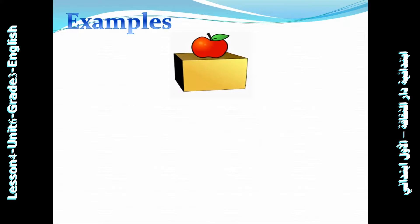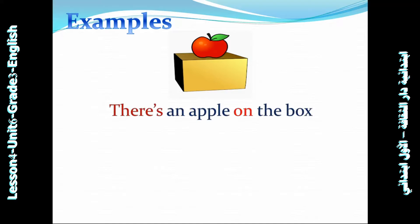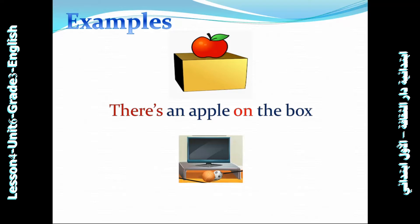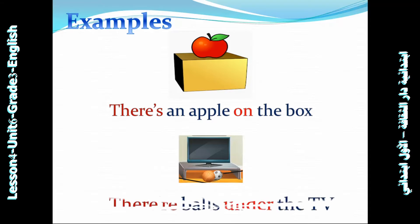look at this picture. You can describe this picture: There is an apple on the box. Now look at this second picture: There are balls under the TV.